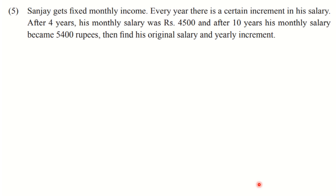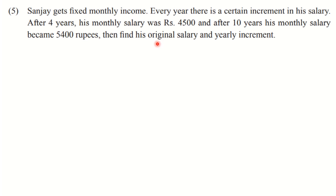Let us go towards Question 5 from Practice Set 5.2. Sanjay gets a fixed monthly income. Every year there is a certain increment in his salary. After 4 years his monthly salary was Rs. 4,500, and after 10 years his monthly salary became Rs. 5,400. Find his original salary and yearly increment. The person Sanjay has a fixed income with two parts: the original salary — the salary from the first year — and the yearly increment.